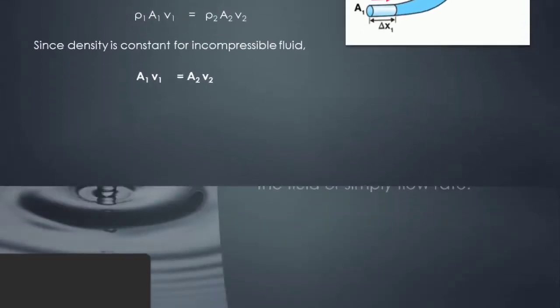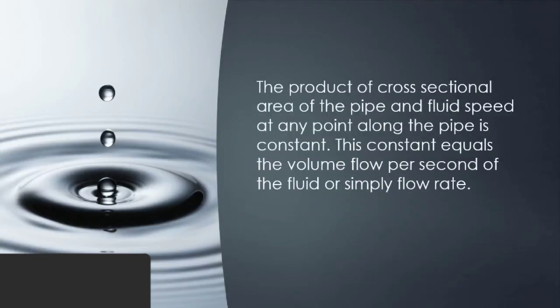The product of cross-sectional area of the pipe and fluid speed at any point along the pipe is constant. This constant equals the volume flow per second of the fluid, or simply flow rate.